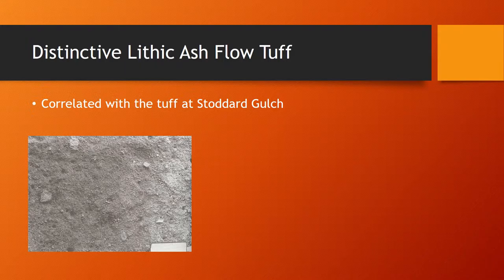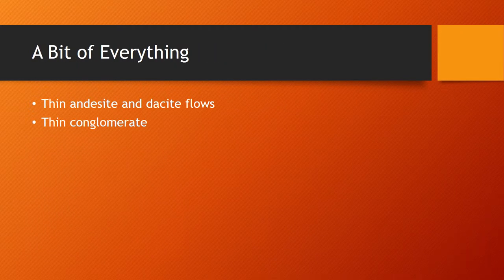After the formation of more volcaniclastic sedimentary rock, we have a layer of distinctive lithic ash flow tuff, which is correlated with the tuff at Stoddard Gulch. Stoddard Gulch is located near the southeast edge of our geologic province.